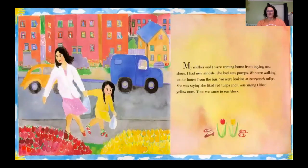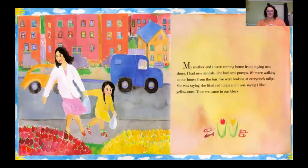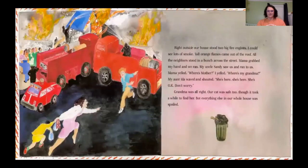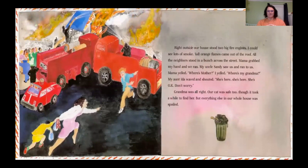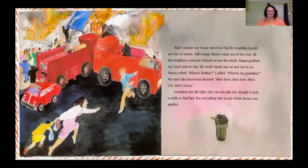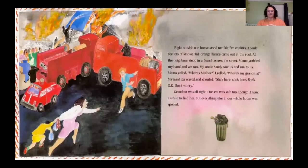My mother and I were coming home from buying new shoes — I had new sandals, she had new pumps. We were walking to our house from the bus, looking at everyone's tulips. She liked red tulips and I liked yellow ones. Then we came to our block. Right outside our house stood two big fire engines. I could see lots of smoke — tall orange flames came out of the roof. All the neighbors stood in a bunch across the street. Mama grabbed my hand and we ran. My uncle Sandy saw us and ran to us. Mama yelled, 'Where's mother?' I yelled, 'Where's my grandma?' My Aunt Ida waved and shouted, 'She's here, she's okay, don't worry.' Grandma was all right. Our cat was safe too, though it took a while to find her. But everything else in our whole house was spoiled.